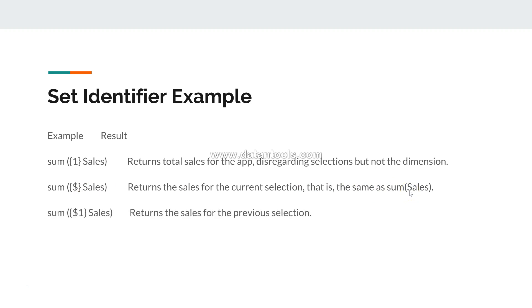The third example is Sum({$1} Sales), which returns the sales for the previous selection. For example, if you made a selection on Furniture, then Technology, then something else, it will show the last selection. If you want to analyze both the current selection and the last selection together, you can use '$1' to identify the previous selection.